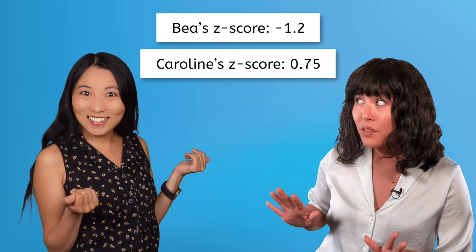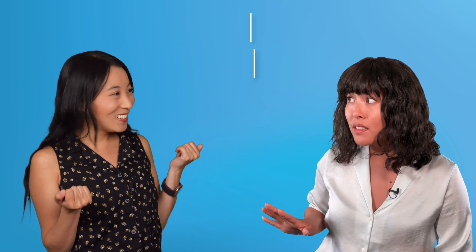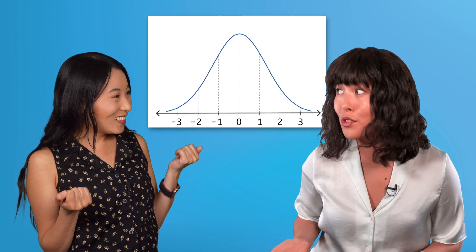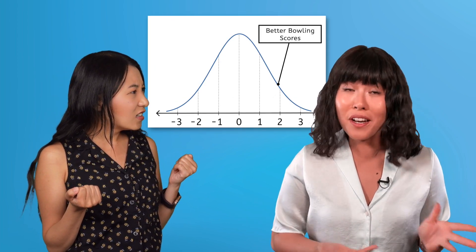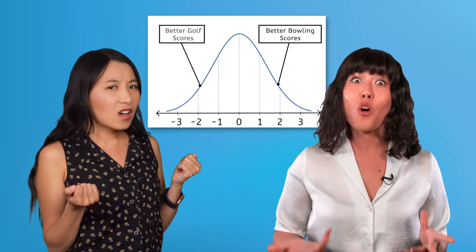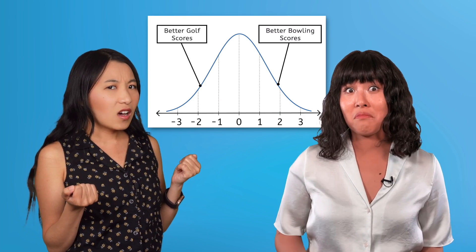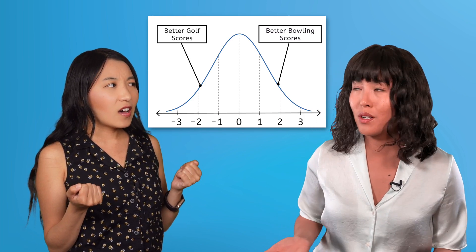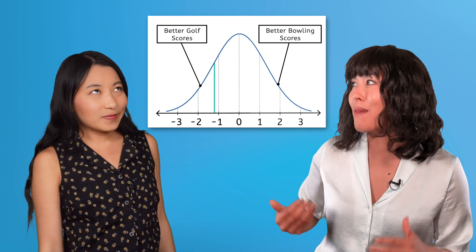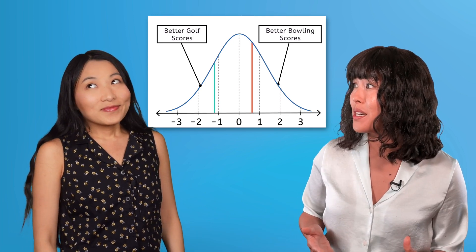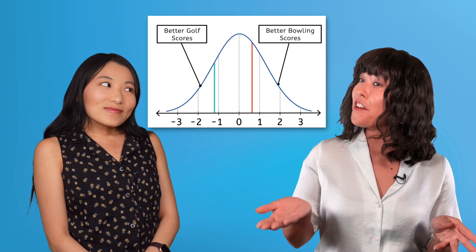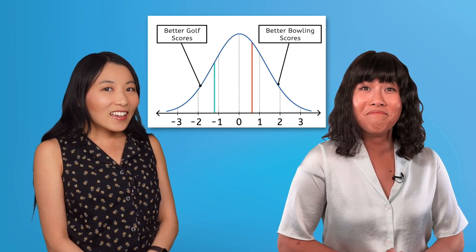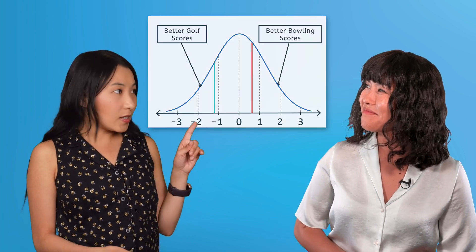Not so fast, Caroline. Remember, golf has different scoring rules. For bowling, a high score is better, but in golf, a lower score is better. So while your z-score is 0.75, my z-score of negative 1.2 is actually further from the mean in the more favorable direction. Okay, looks like you win this round. I concede. That's right, but don't worry, Caroline — we've still got our weekly chess match coming up, and we'll see who's the better chess player then.